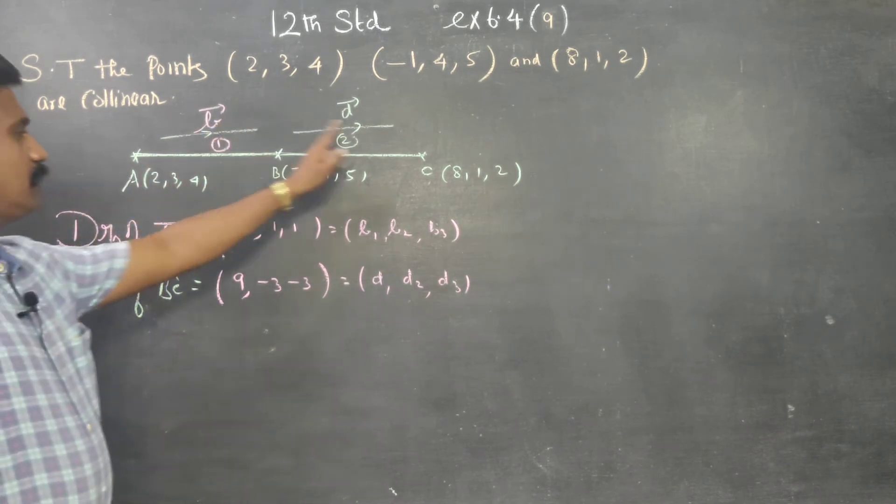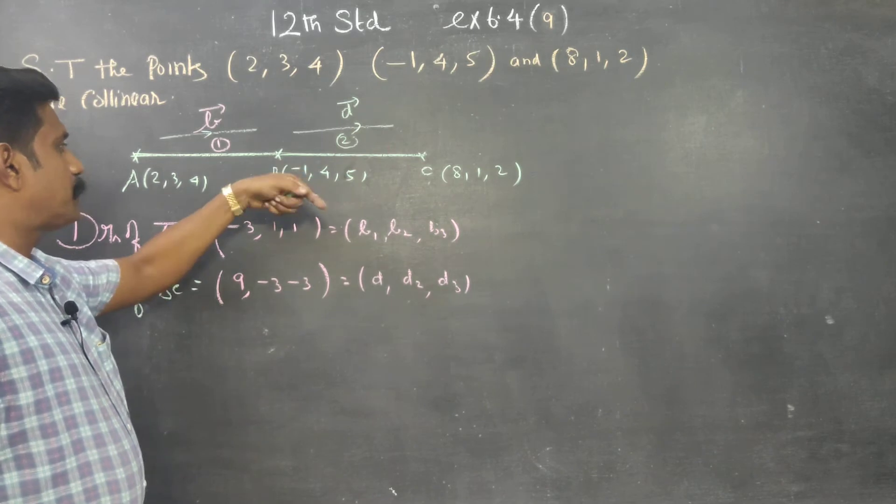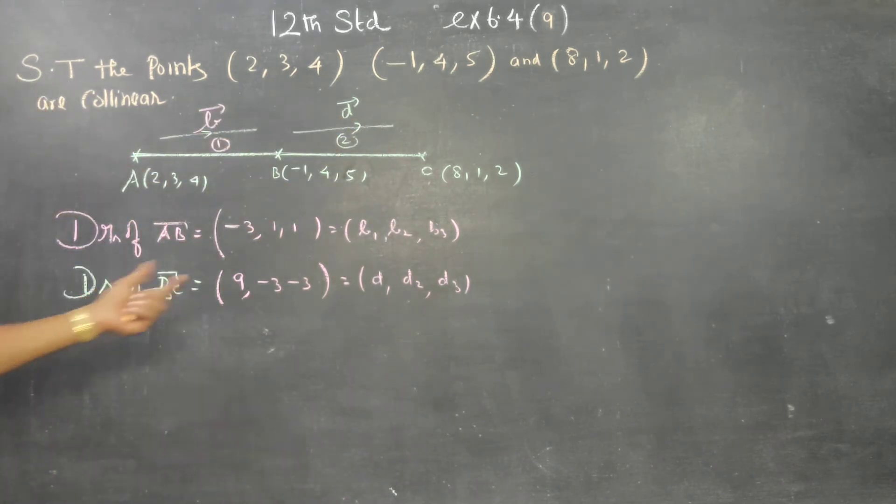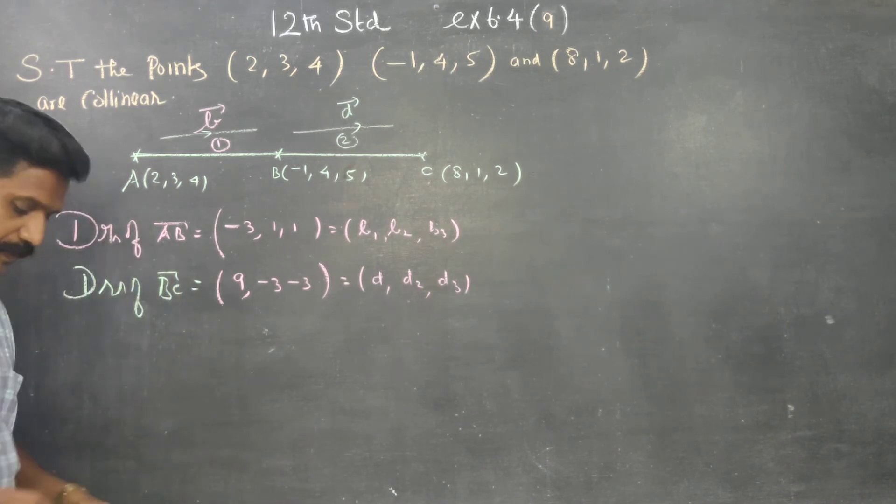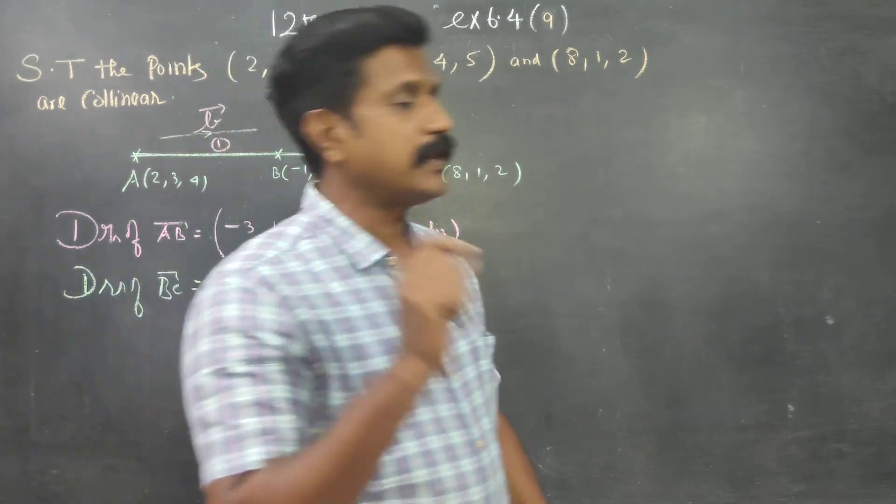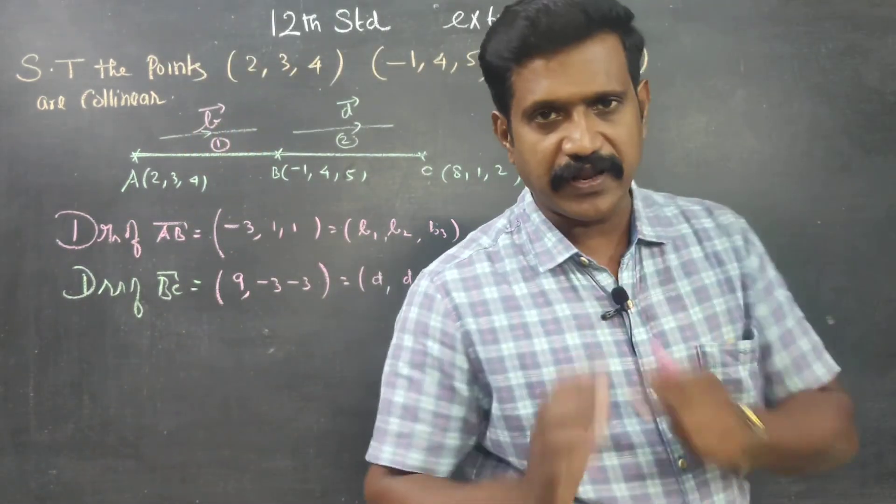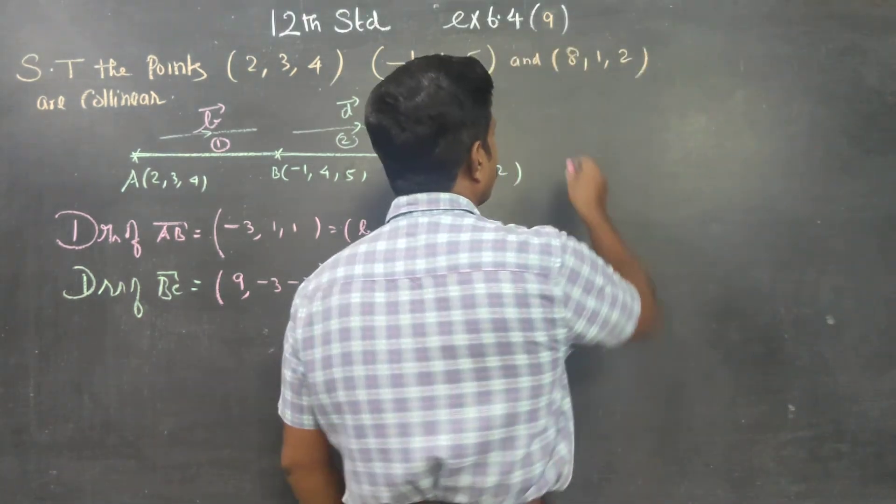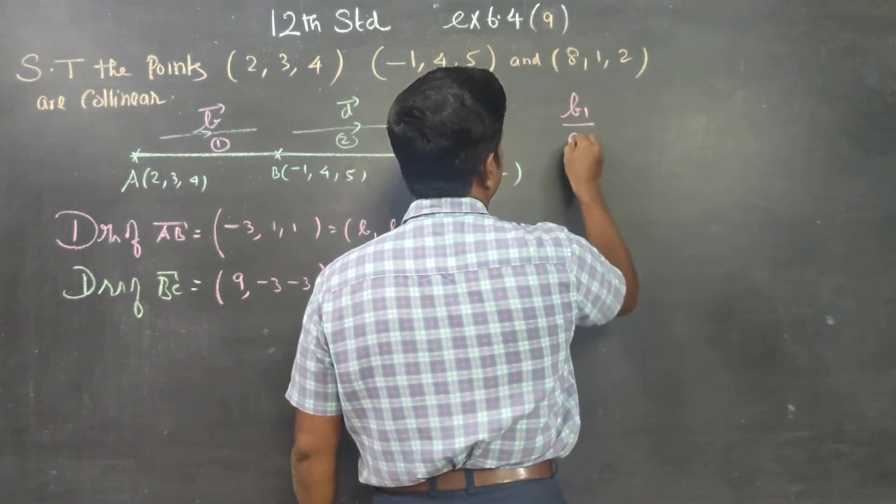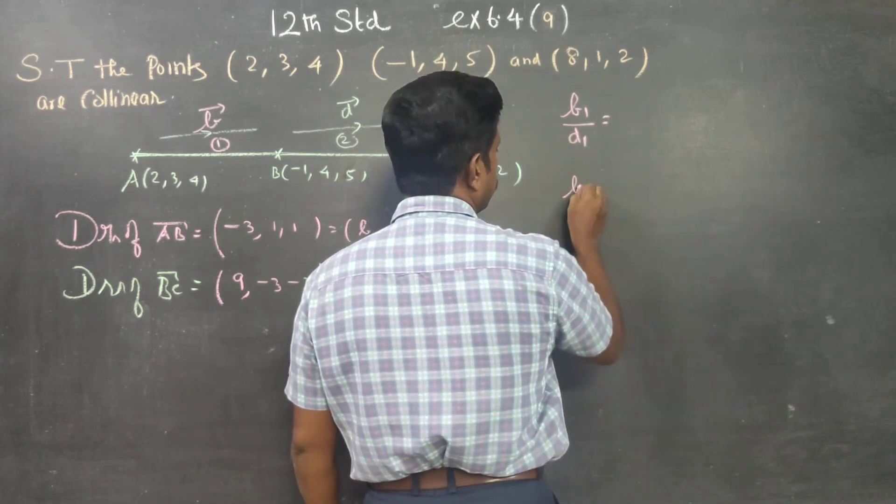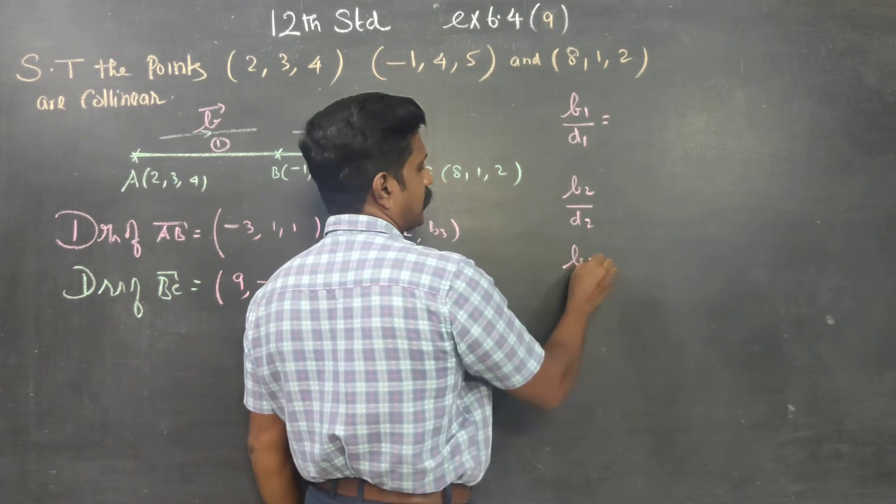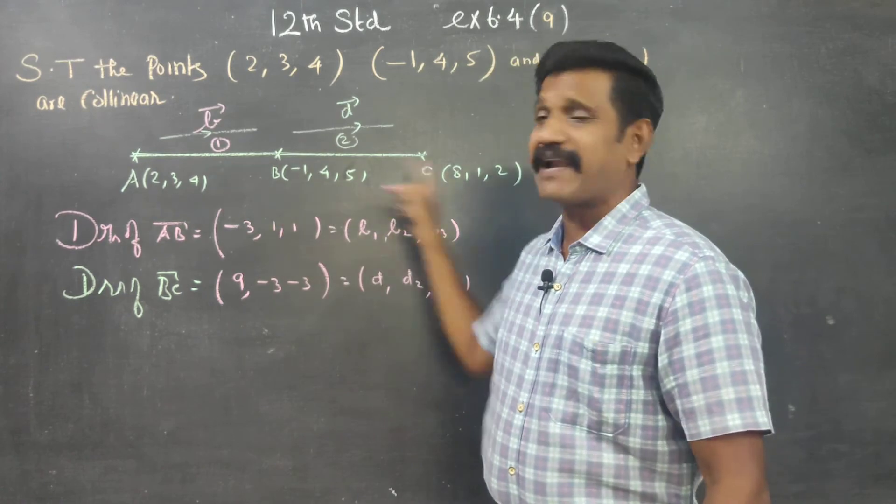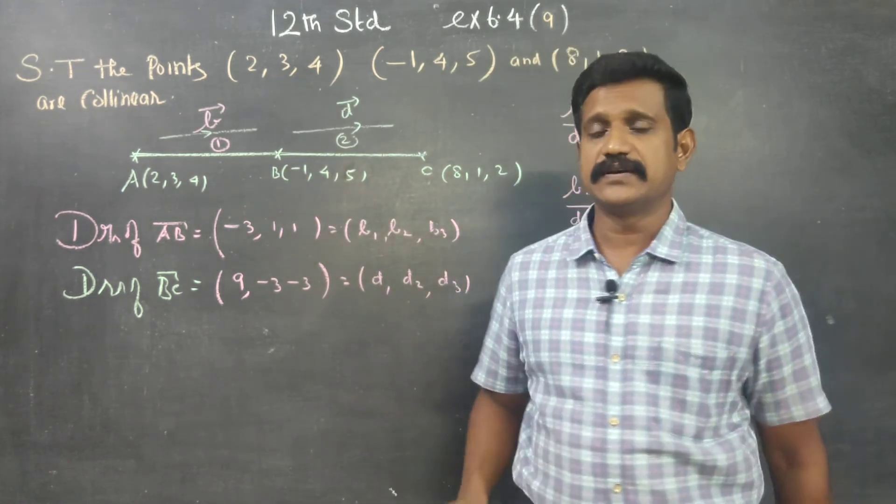These vectors will be parallel. D vector, B vector, parallel to AB, parallel to BC are in the direction ratios. But these are the direction ratios of AB and BC. Condition for collinear: the lines to be parallel are in the direction of B1 by D1, B2 by D2, B3 by D3. This is all equal and then the two lines are parallel. AB is parallel to BC.